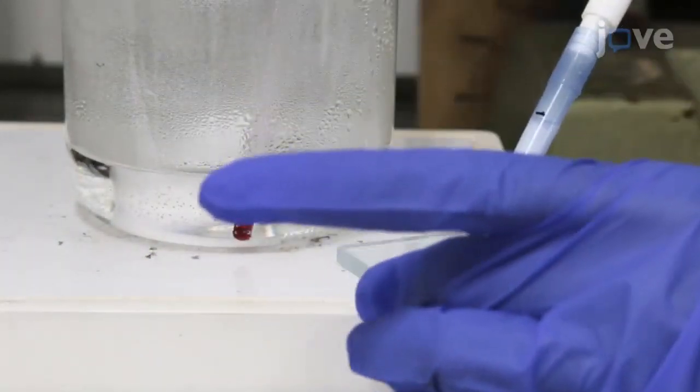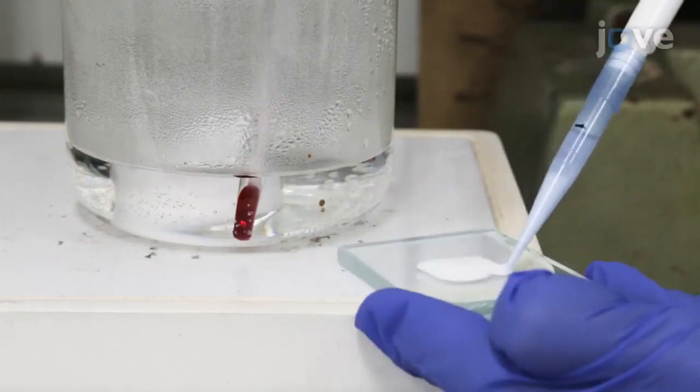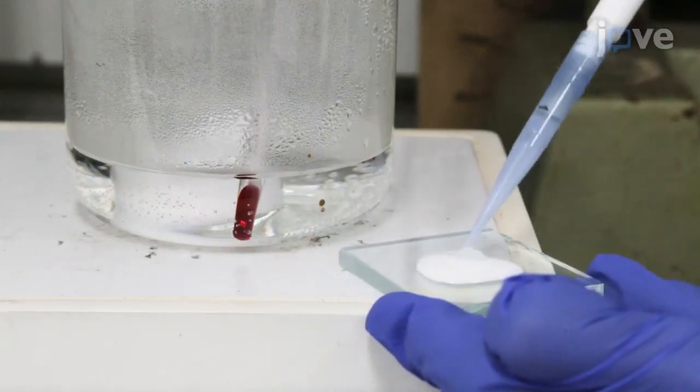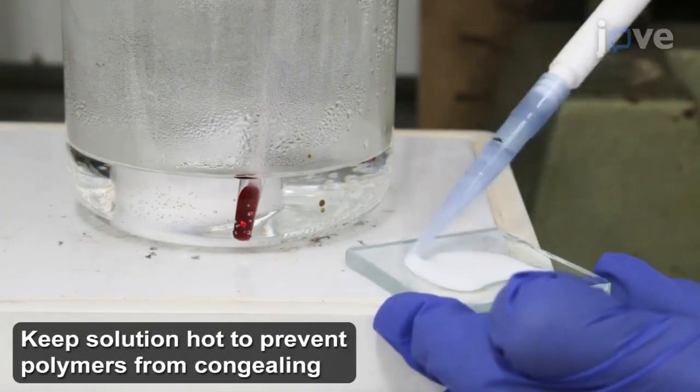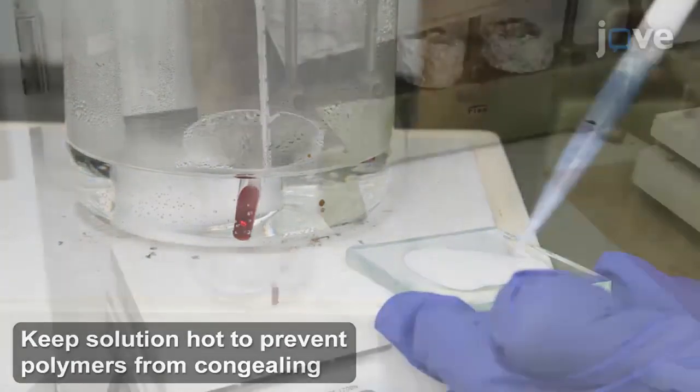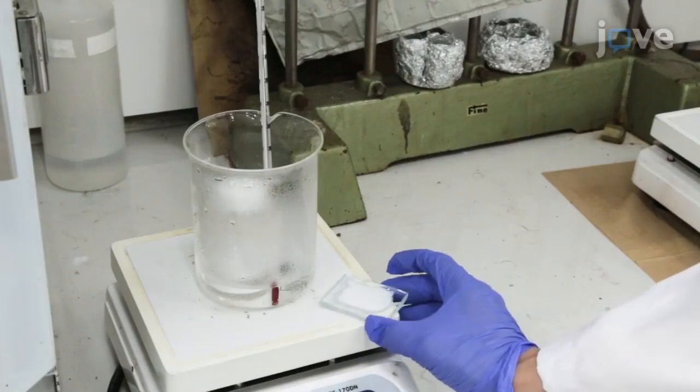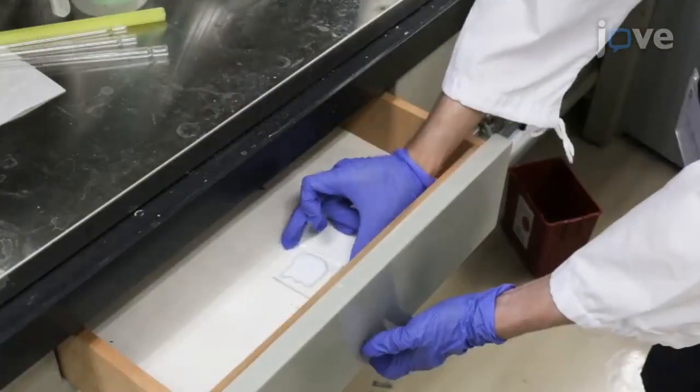Place a glass substrate on a hot plate preheated to 100 degrees Celsius, and drop 750 mL of the solution onto the substrate. To dry the sample, store it in the dark overnight at room temperature.